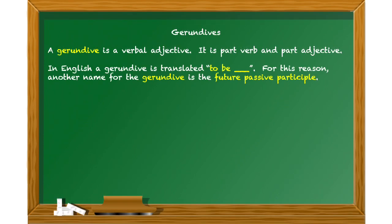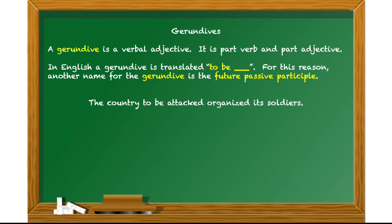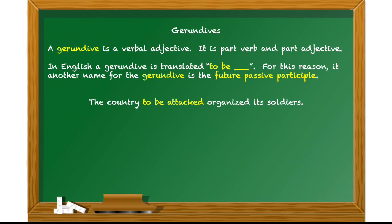In English, a gerundive is translated as 'to be blank', and this is why another name for the gerundive is the future passive participle. If you think something is 'to be done', that obviously hasn't happened yet, which sounds very much like the future. Consider this sentence: 'The country to be attacked organized its soldiers.' We have 'to be attacked' as our gerundive. You could have said 'the big country' or 'the rich country' — in this case it's the 'to be attacked' country. 'Attack' is obviously a verb, but the phrase 'to be attacked' is functioning like an adjective describing 'country'.